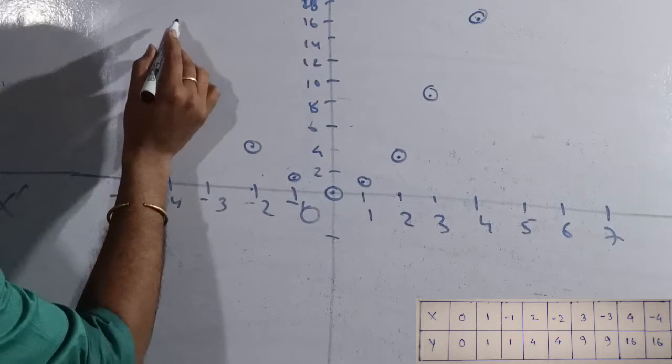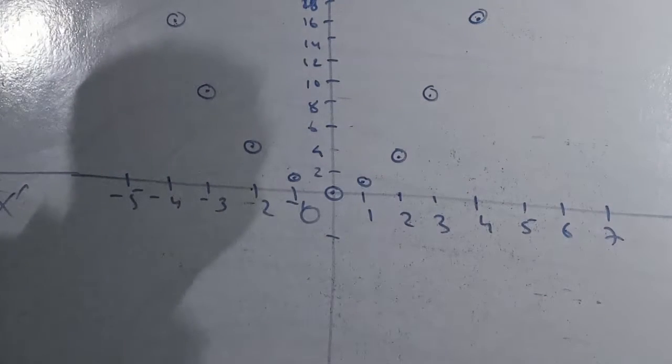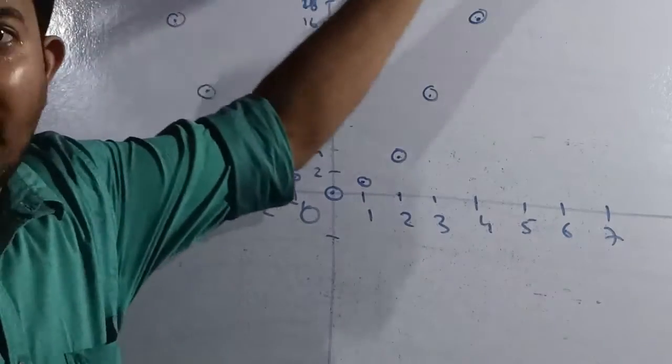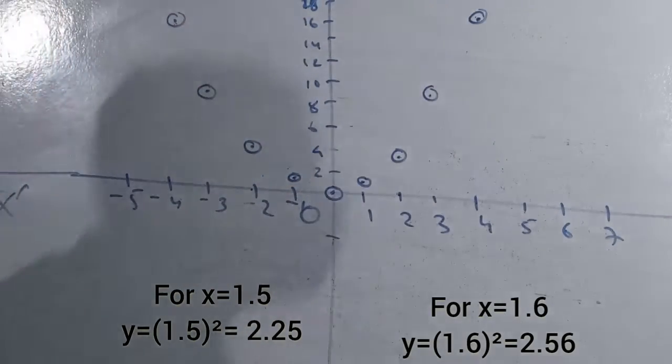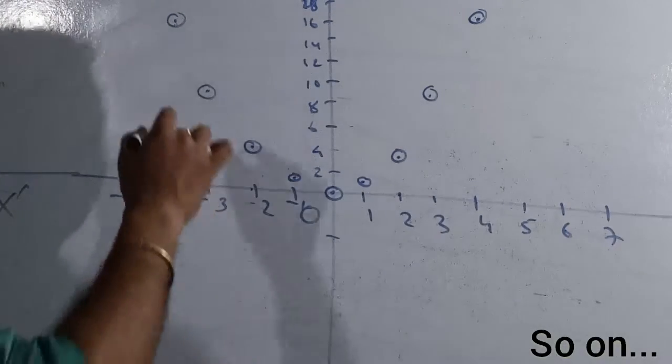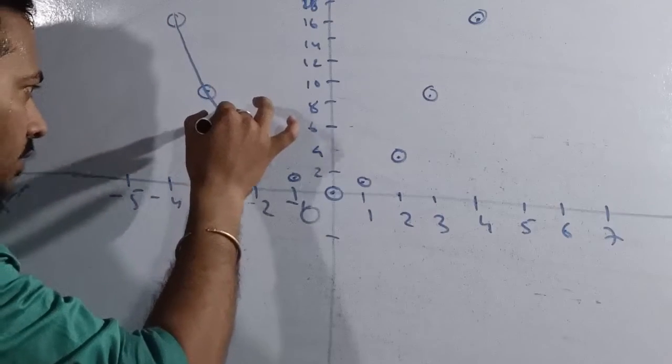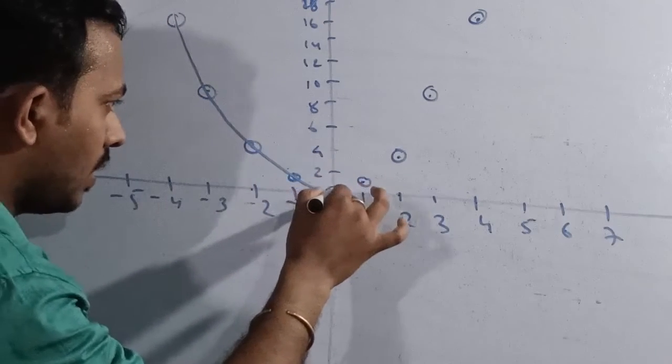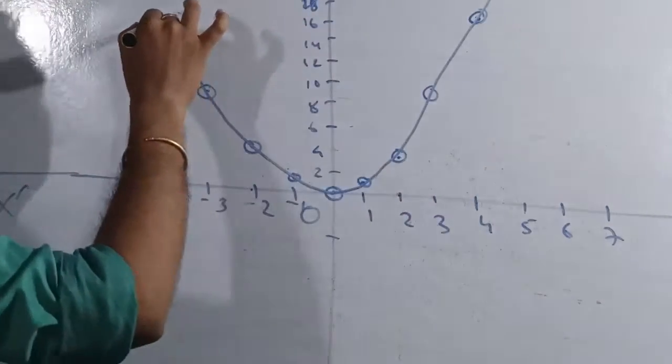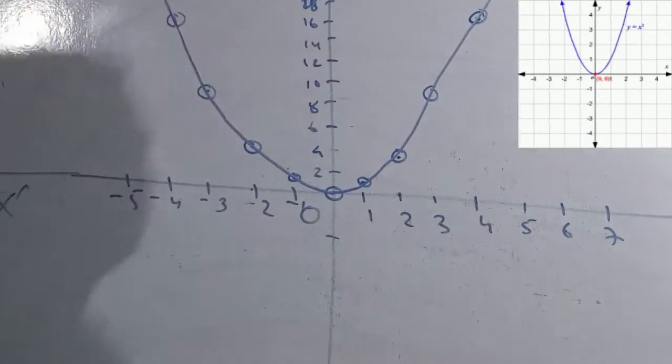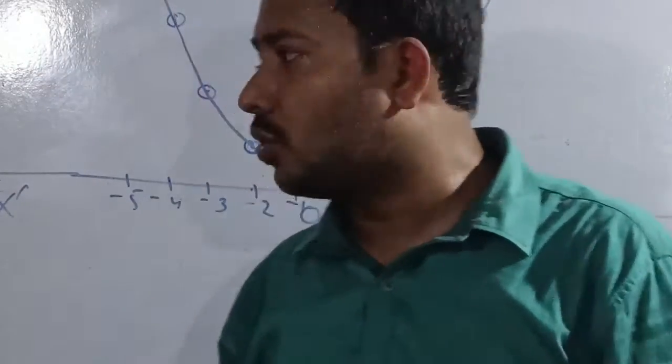If we take very close numbers like 1.5, you can take that point also, it will be a smooth curve. Use freehand. You can see that you will get the graph look like this, and this graph will extend like that. This graph is called parabola, open upwards.